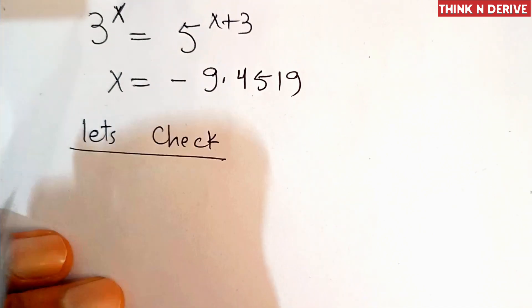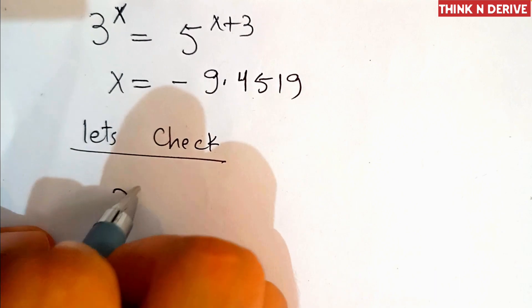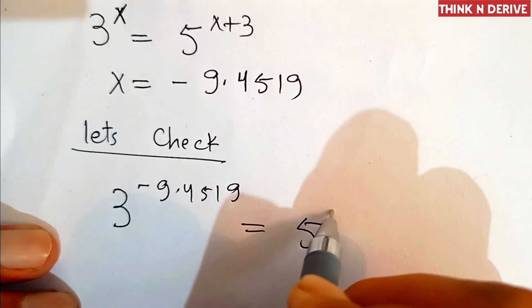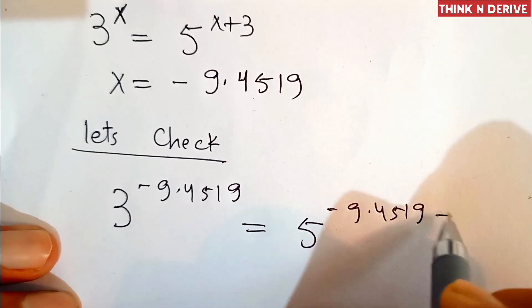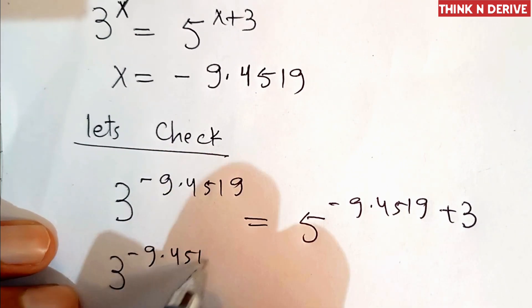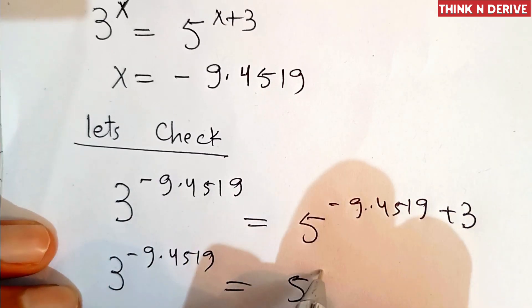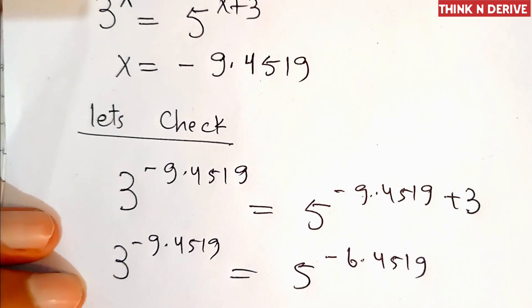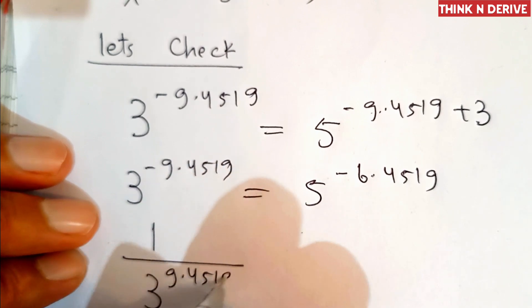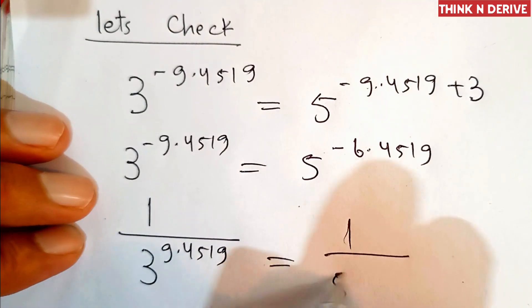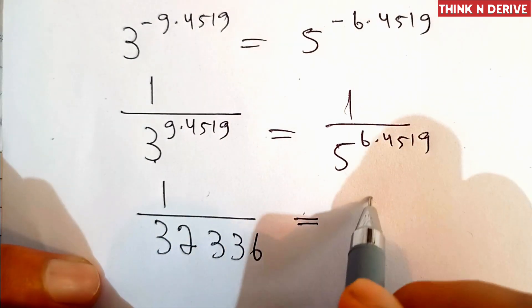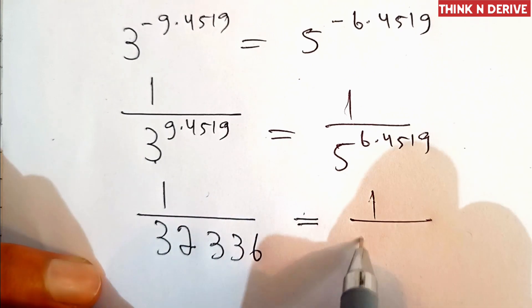Now we will check whether our solution is correct. We put x equal to minus 9.4519 into the original equation: 3 power minus 9.4519 equal to 5 power (minus 9.4519 plus 3), which is 5 power minus 6.4519. Writing these as 1 by 3 power 9.4519 and 1 by 5 power 6.4519, both sides evaluate to the same value, confirming the solution is correct.